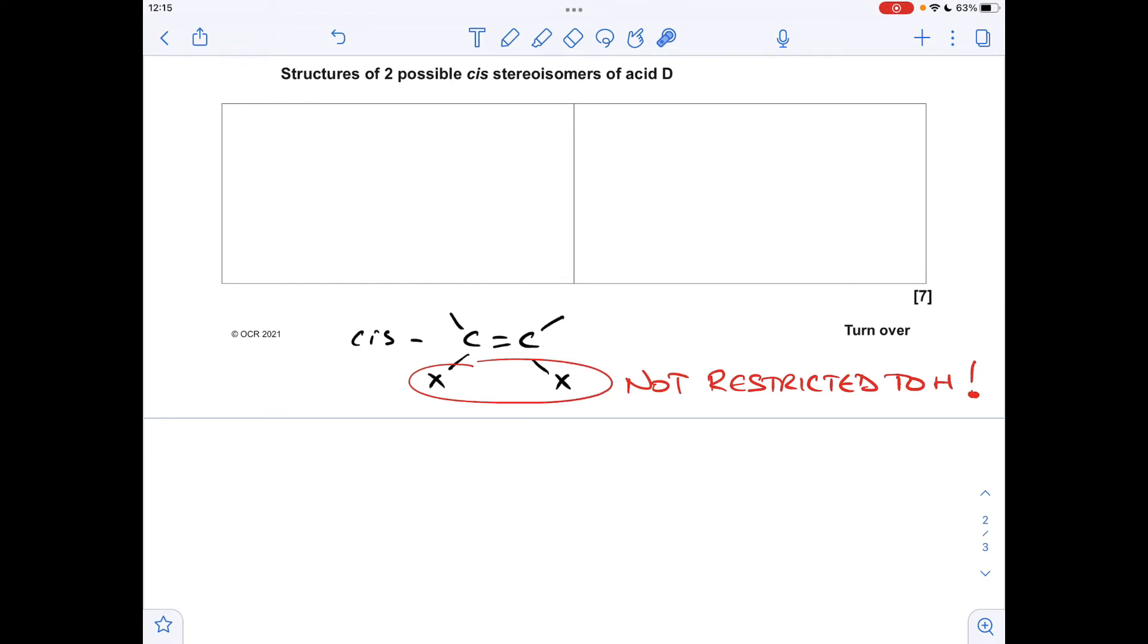you've got to be comparing the relative positions of the same groups or atoms. So cis is when the same groups or atoms are on the same side of the C=C double bond. So you can see these Xs here are both pointing down. So this is in the cis configuration. If that X was up here, that would be the trans configuration.